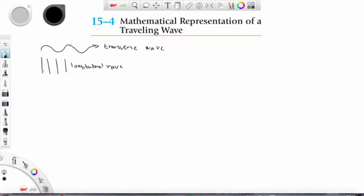Transverse means that the particles of the medium, in this case water, are moving up and down. Whereas in a longitudinal wave the particles are moving along or parallel to the direction of the traveling wave.